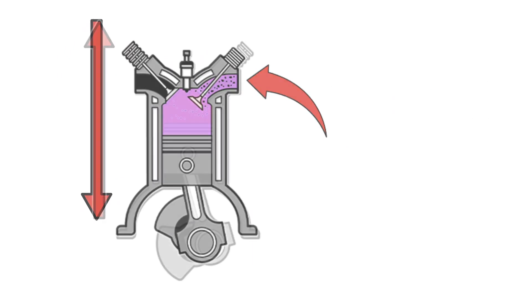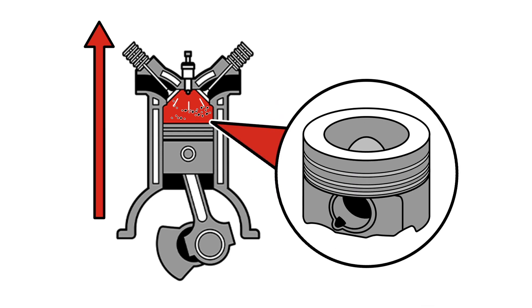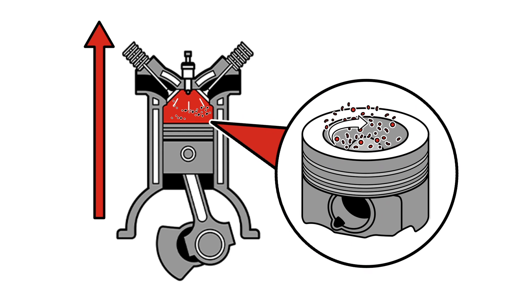As the piston moves up for a compression stroke, the power cylinder is filled with atomized diesel fuel. An area on top of the piston called the bowl moves the air in a circular motion, mixing with the atomized fuel.